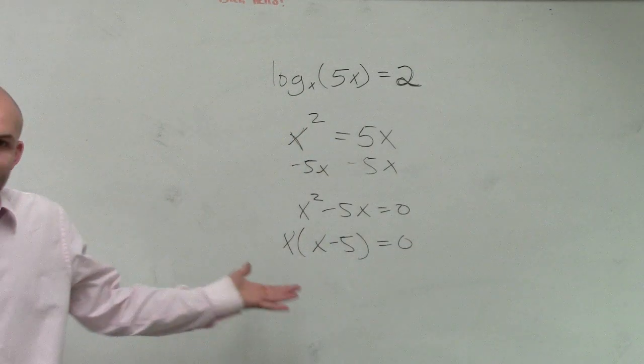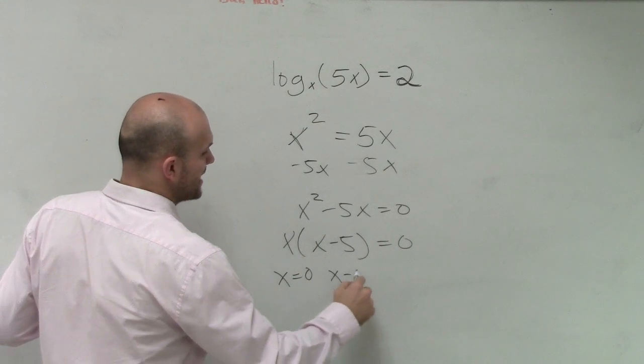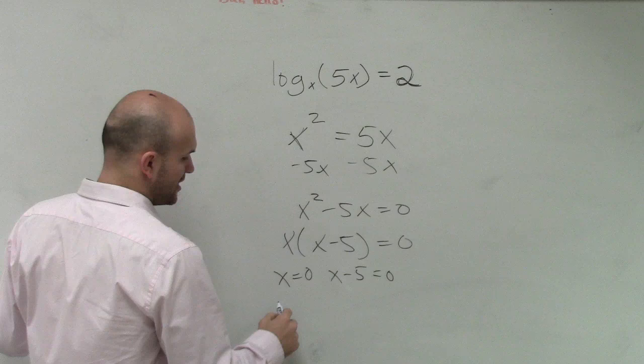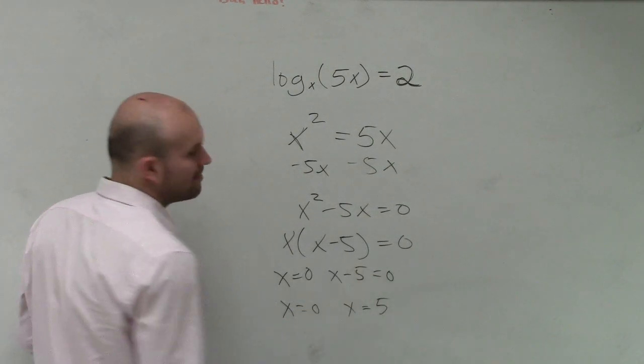Now, since I factored it, I can now apply the zero product property. So x equals 0 and x minus 5 equals 0. Therefore, x equals 0 or x equals a positive 5.